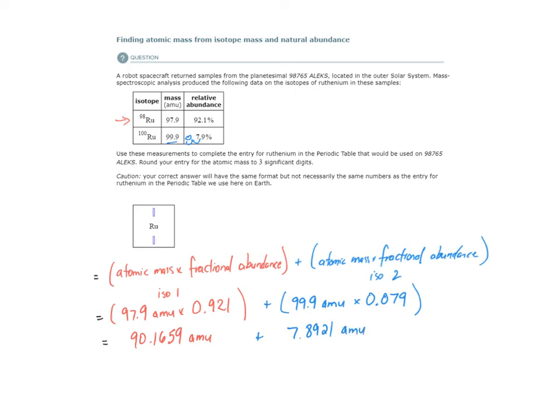Now let's add those two together to get our average atomic mass. 7.8921 plus 90.1659 gives me 98.058 amu.